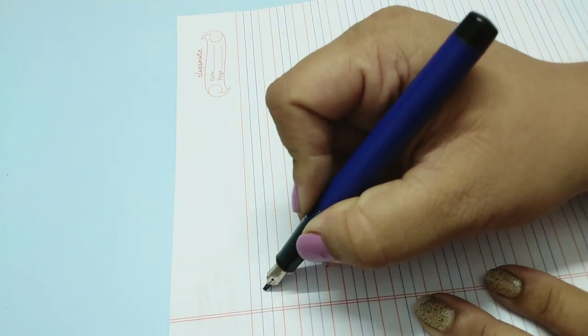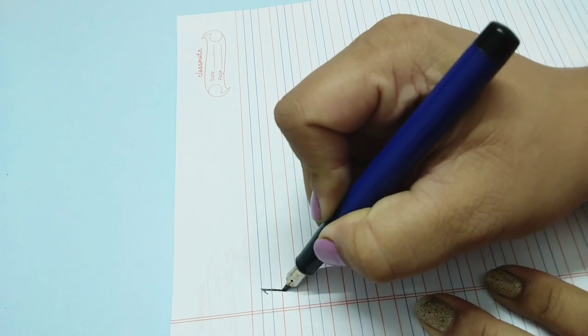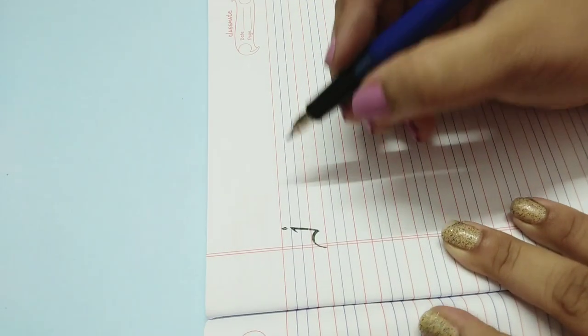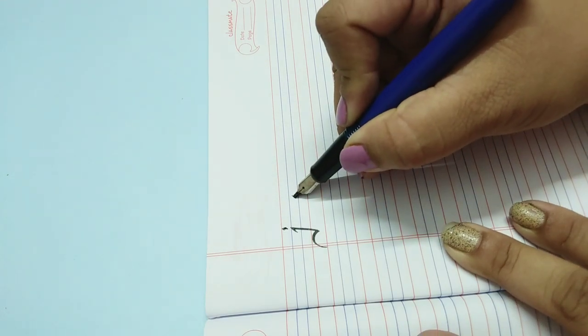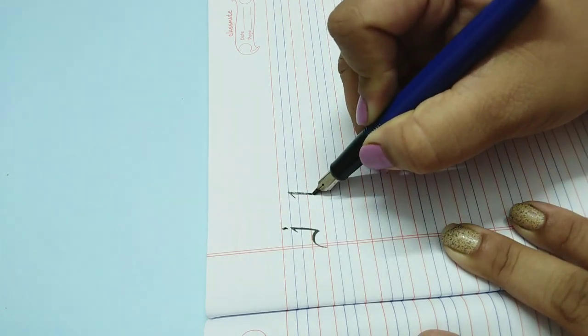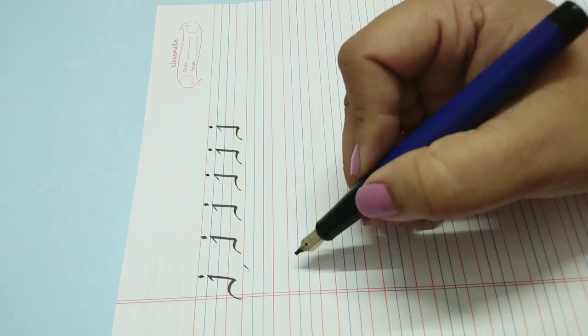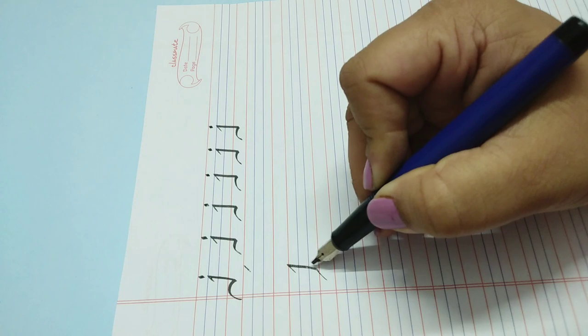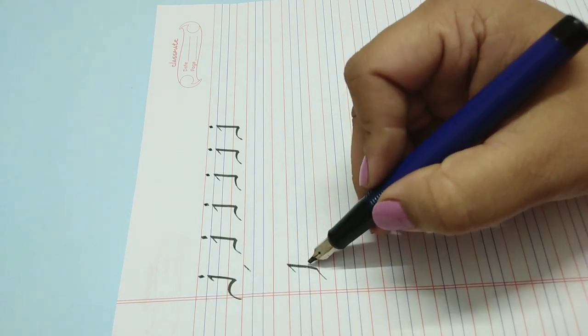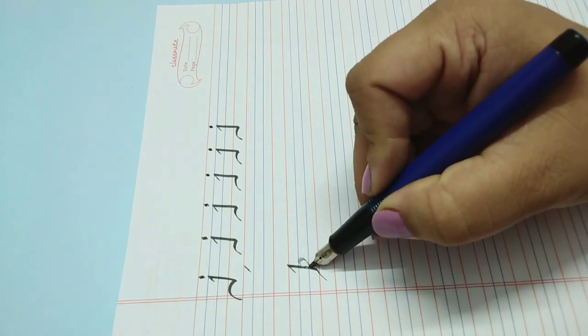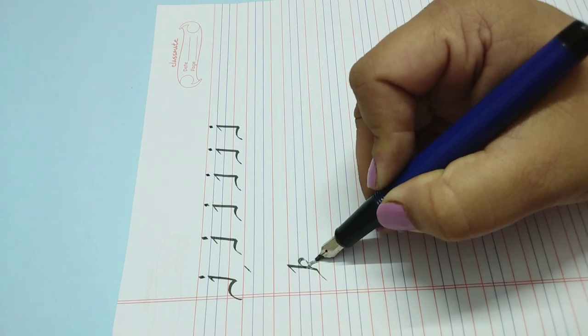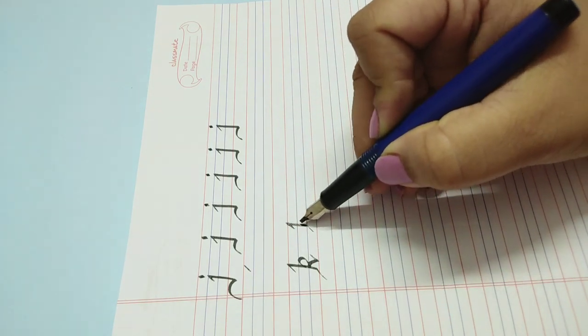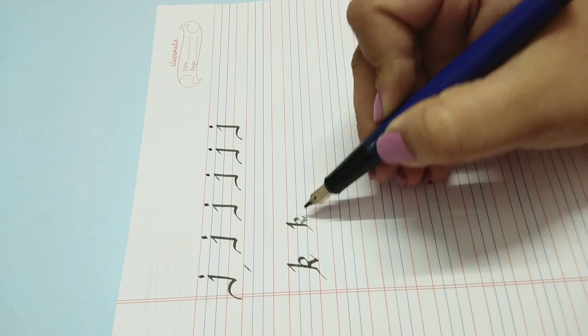Let's see our J. So it is just a sharp start, a down line, like this. You guys have to write it between these two lines.